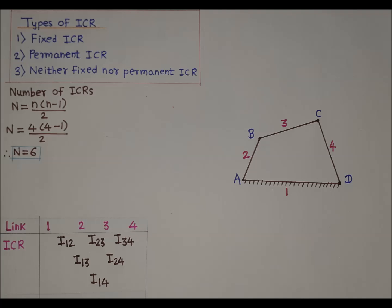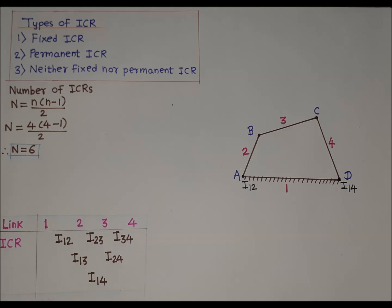Now we will locate the six ICRs. Between link number one and link number two there is a turning pair at point A. Hence ICR i12, for relative motion between link one and link two, will be at point A — that is, i12 will be at the turning pair between link one and two.